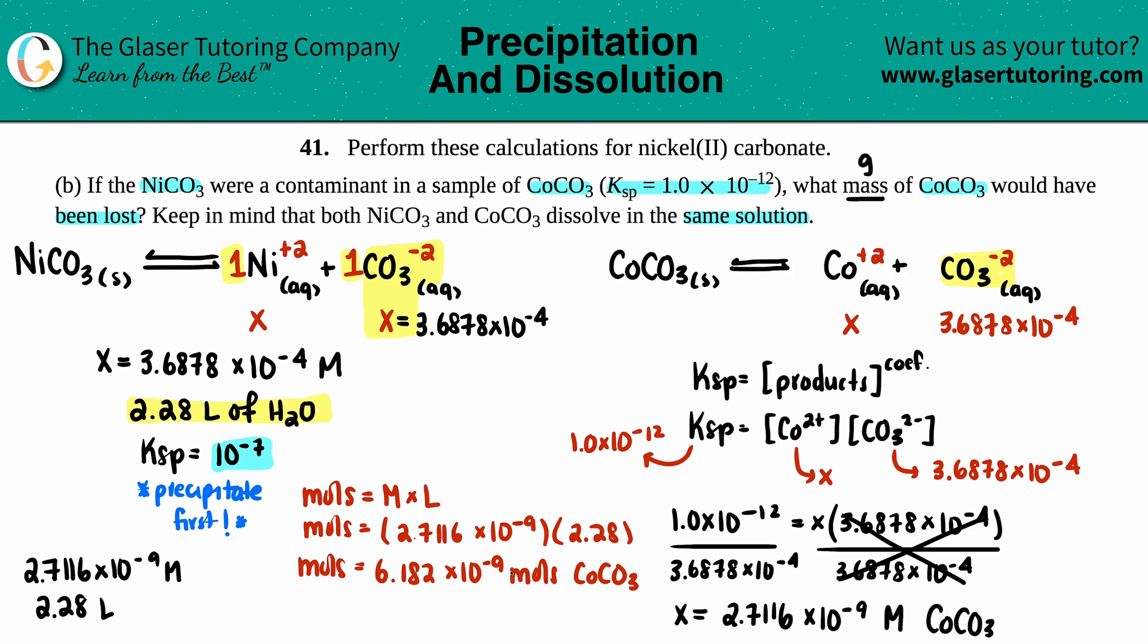Now all we have to do is convert the moles into grams. How do we go from moles to grams? We multiply by the molar mass found on the periodic table. Let's look at the grams of CoCO3: 58.93 for cobalt plus 12.01 plus 3 times 16. I get 118.94, so I'm just going to multiply this number by 118.94. 6.182 times 10 to the negative ninth times 118.94.